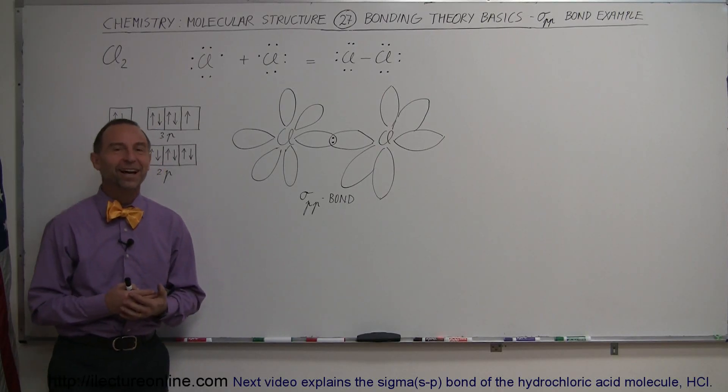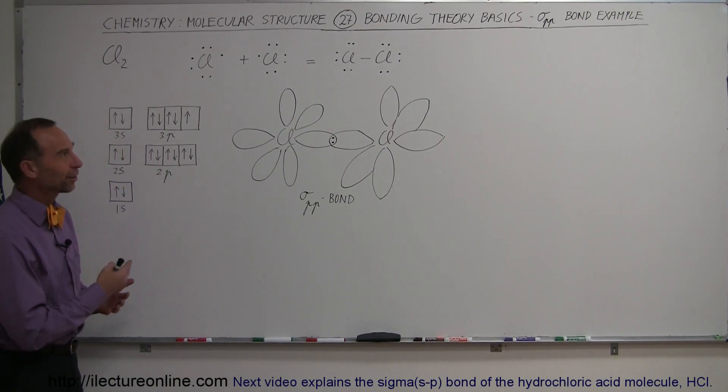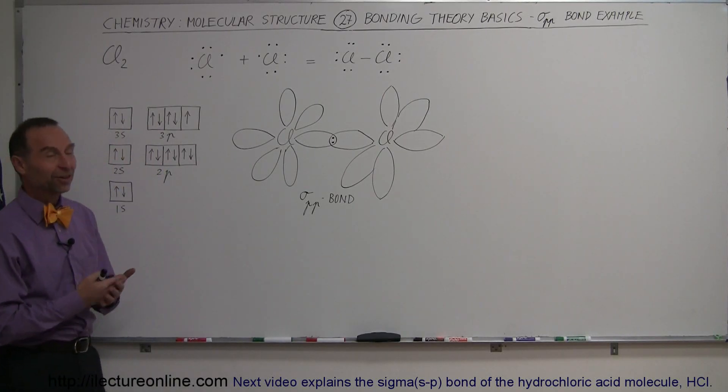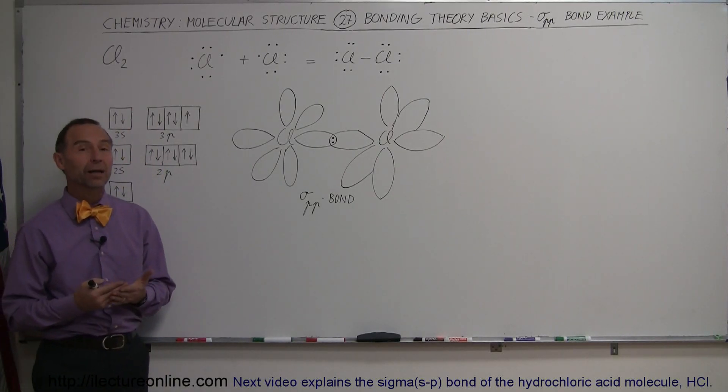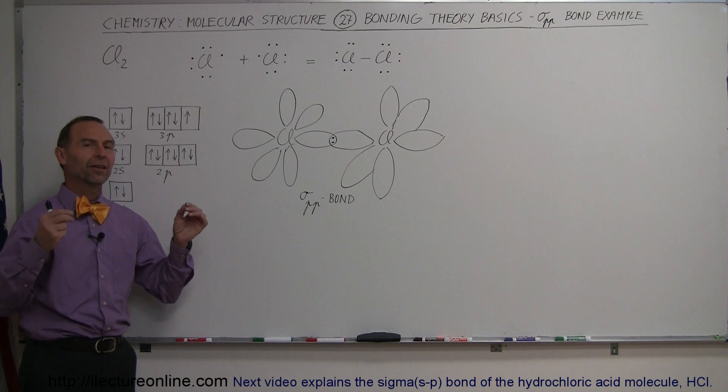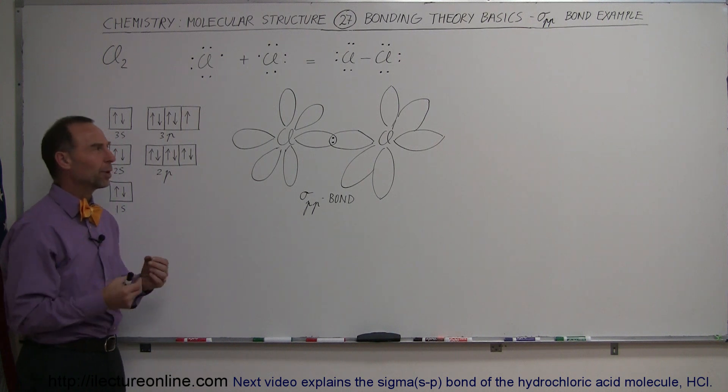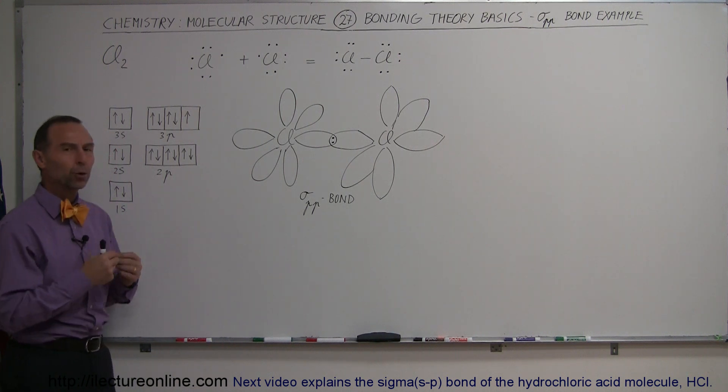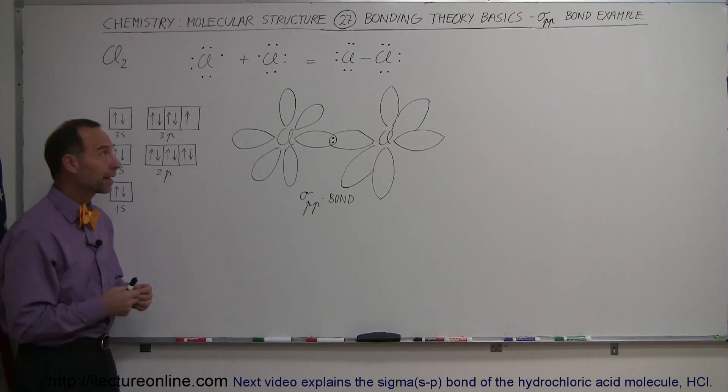Welcome to ElectronLine. Here we're going to take a look at an example of a sigma pp bond — that means a sigma bond between two p orbitals.